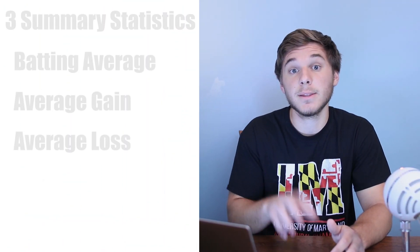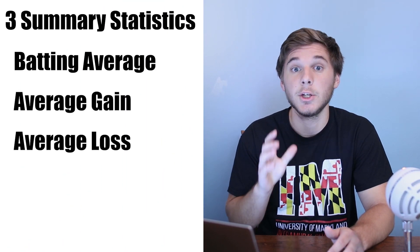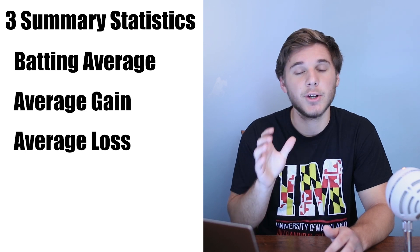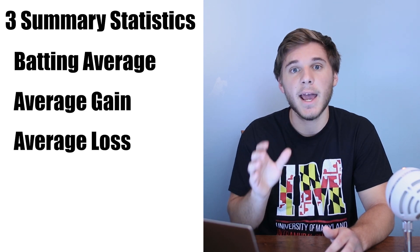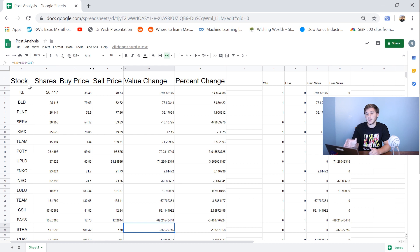In this video I'm going to show you guys specifically how to identify the three summary statistics: your batting average, your average gain, and your average loss. After you know these three pieces of information you know what you need to do to get better results. I'm also going to give you guys access to this Google Sheet that I've made that helps simplify the process.